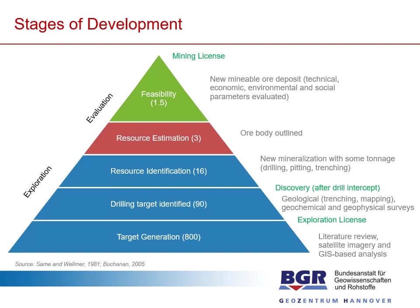The pyramid shows different stages in the development of a mining project — from the bottom, from target generation to the top, feasibility, and the very top, the tip of this pyramid, where a mine would be located. These different stages are also related to different risks. At the bottom, during the target generation, there is a very high probability that your mining project will not proceed to the next step, to the drill target identification. You need 800 projects in the stage of target generation and only one will become a mine at the end.